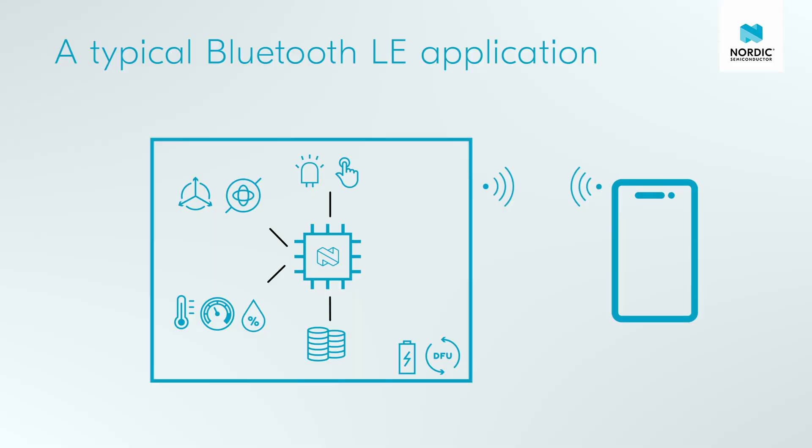In this hands-on video series, we will first explore a type of IoT application which we will refer to as a typical Bluetooth low-energy application. Throughout this series, we will build this application from the ground up to demonstrate how the NRF Connect SDK can expedite its development in a very short period of time while maintaining a high level of scalability and portability. Let's dig right into it and take a brief look at this typical Bluetooth low-energy application.